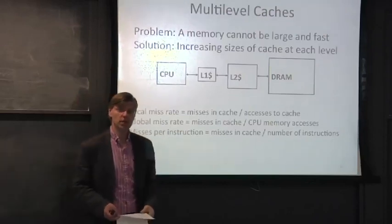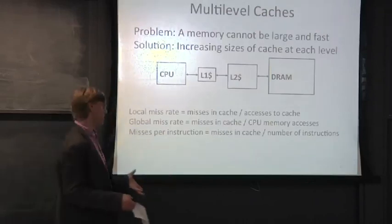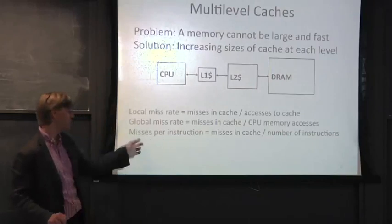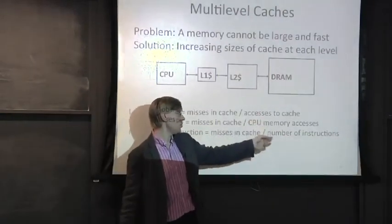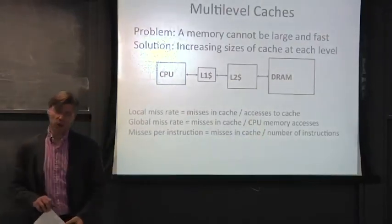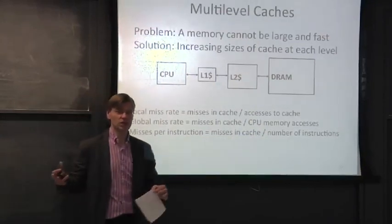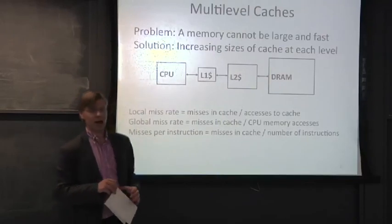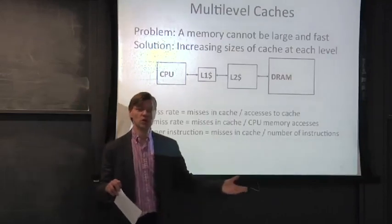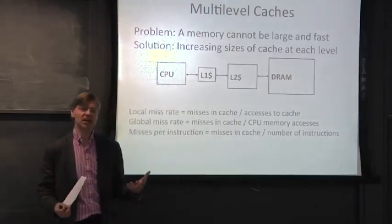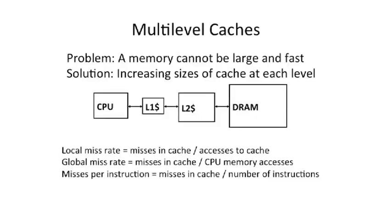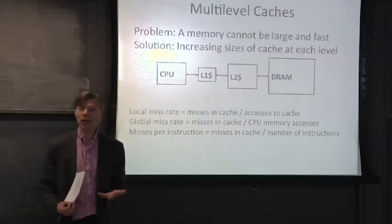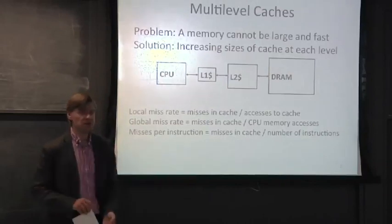A third useful metric is misses per instruction. The difference is in the denominator — instead of accesses per cache or CPU memory accesses, you use the number of instructions. This takes out of the equation how many loads and stores you have as a percentage of instructions. If a program has very few loads and stores but a relatively high miss rate per access, the cache miss rate might look bad, but it may not actually harm performance much.